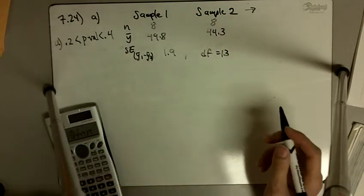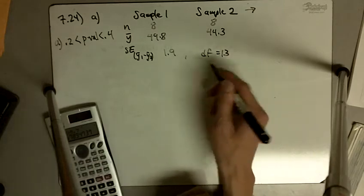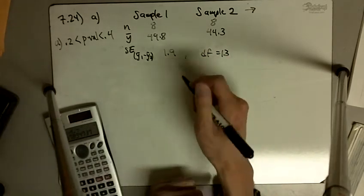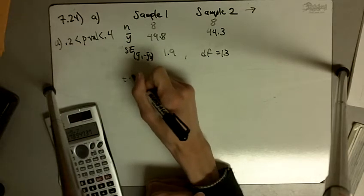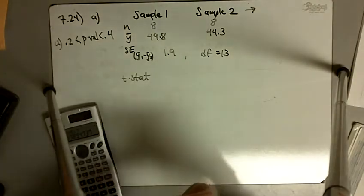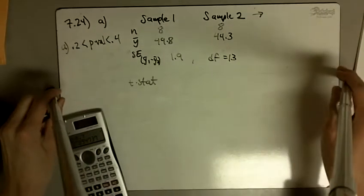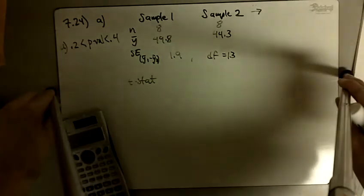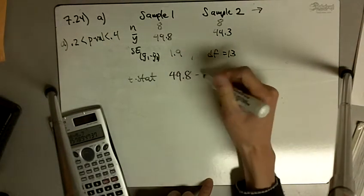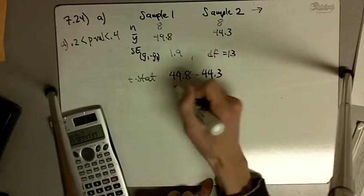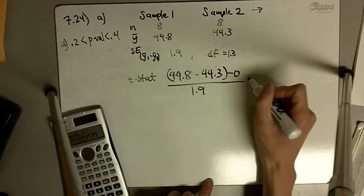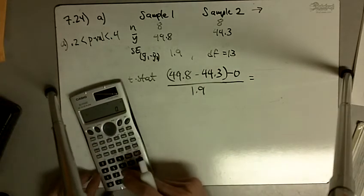If we did our n1 plus n2 minus 2, we would have 14 degrees of freedom. The true degrees of freedom according to this is 13. Our t statistic is 49.8 minus 44.3 minus 0 divided by 1.9.